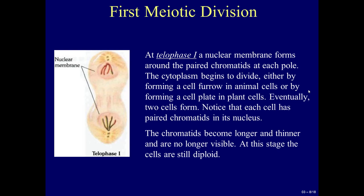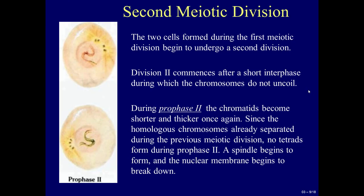Eventually, two cells form. Each cell has paired chromatids in its nucleus. The chromatids become longer and thinner and are no longer visible. At this stage, the cells are still diploid.